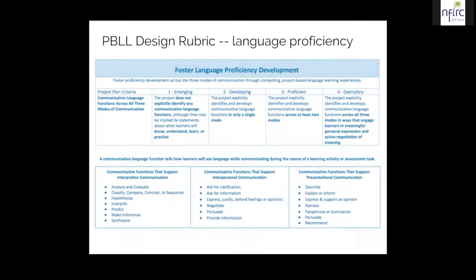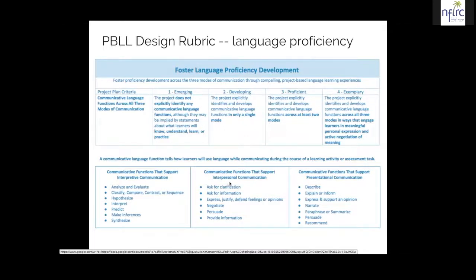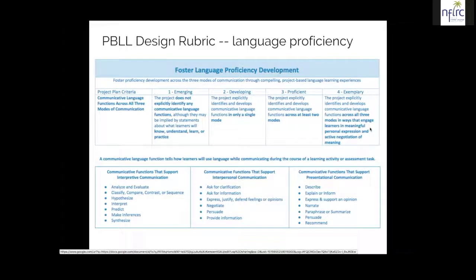Let's look at a few details about this rubric for project design. The first category is language proficiency development. On this page we see the three domains of communication: interpretive, interpersonal, and presentational. The project plan criterion is that communicative language functions are addressed across all three modes of communication. We have descriptors for the project design from emerging to exemplary. An exemplary project would explicitly identify and develop communicative language functions across all three communicative modes in ways that engage learners in meaningful personal expression and active negotiation of meaning.